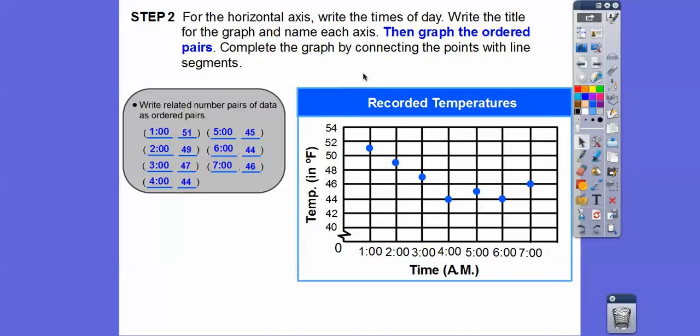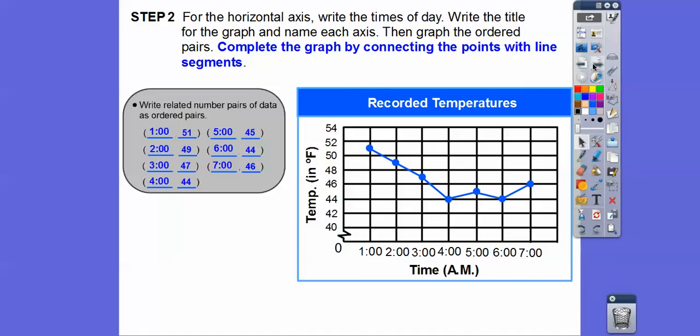Now we're going to complete the graph by connecting the points with line segments. So there it is right there. Now there's our line graph right there. So they have little separate line segments connecting all the points right there.